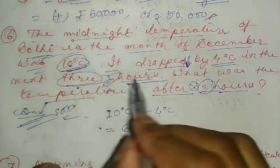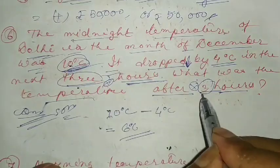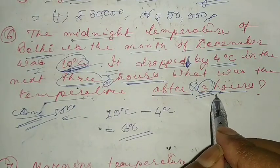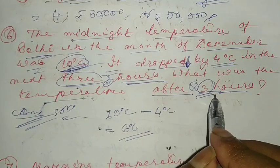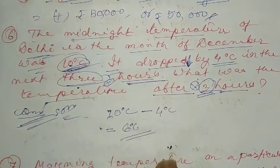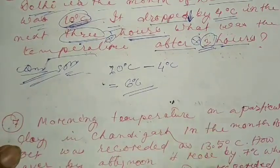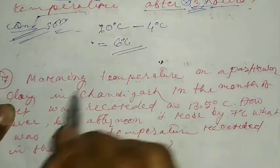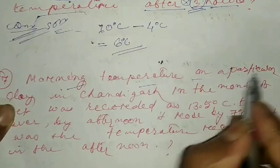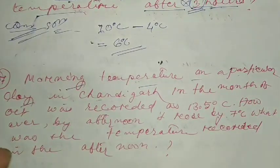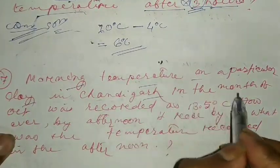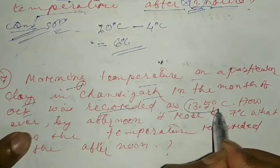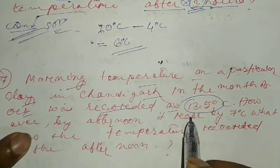Now we move to question number seven. The morning temperature on a particular day in Chandigarh in the month of October was recorded as 13.5 degrees Celsius.